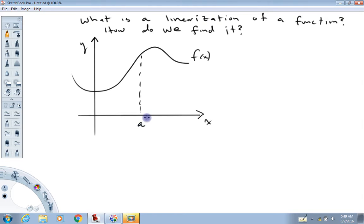We might pick this point. I'm going to call this point A. This value would be F of A. And the linearization of a function at a point is really just like its name implies here.